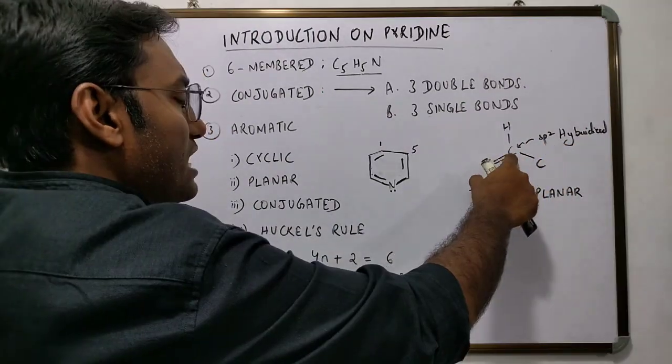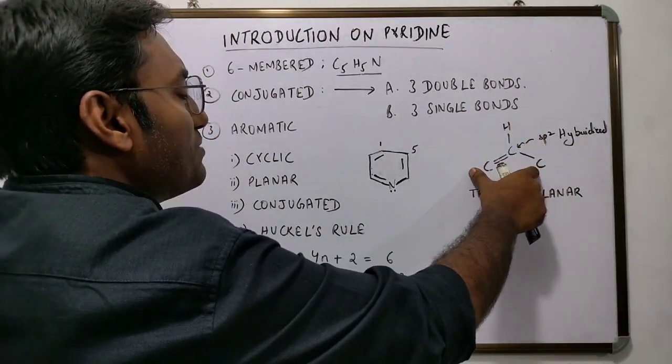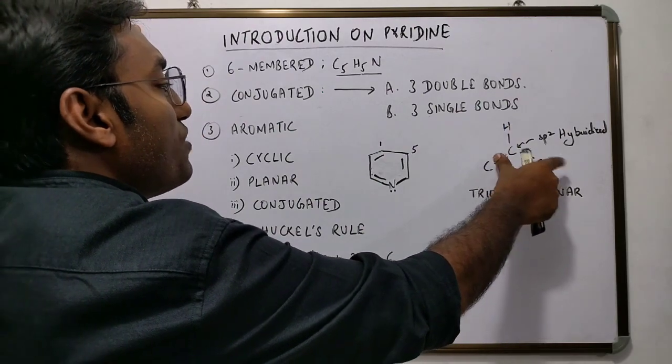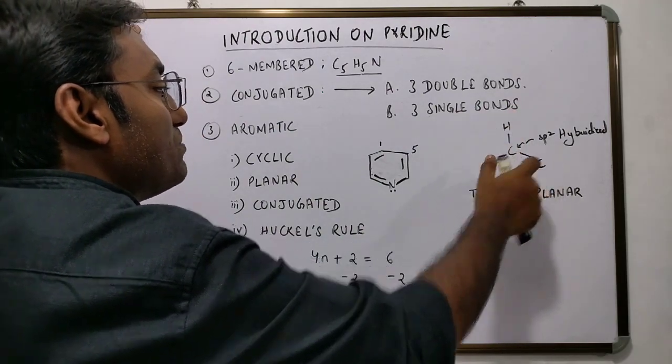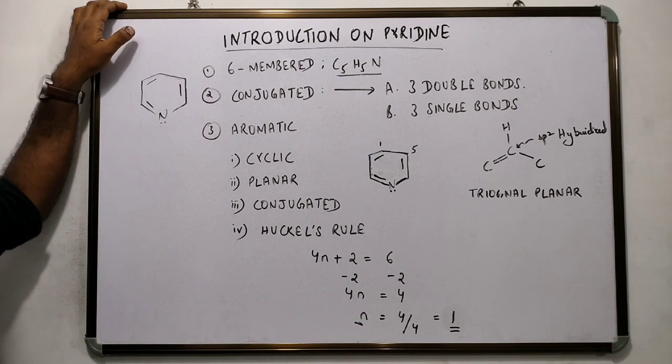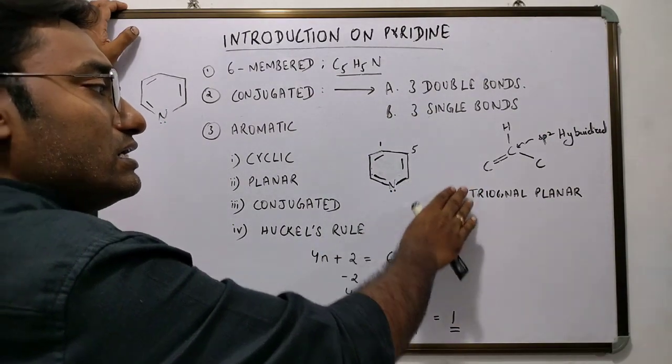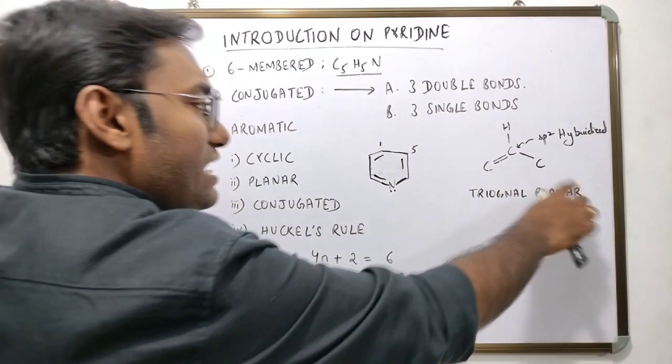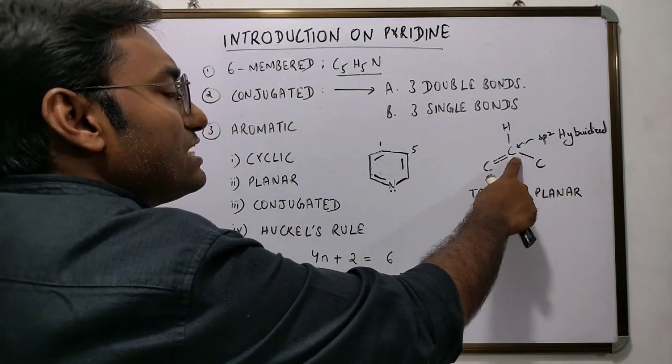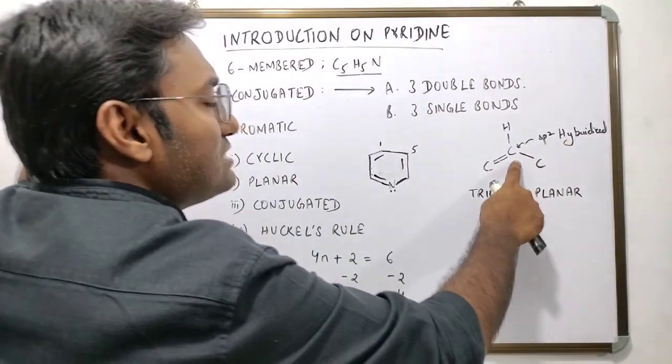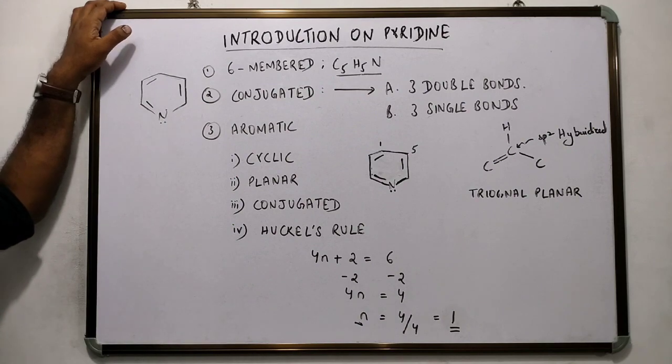And that would lead to a trigonal planar geometry around the central sp2 hybridized carbon atom.